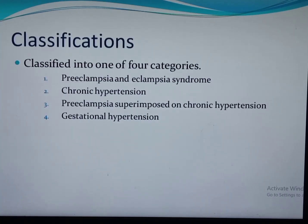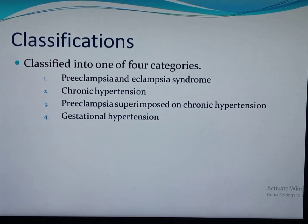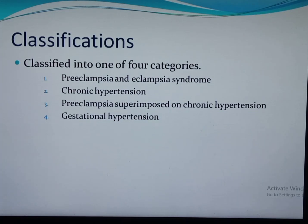There are different classification systems used to classify hypertensive disorders in pregnancy. The commonly used one is proposed by the American College of Obstetricians and Gynecologists, revised in 2013. It classifies into four categories. The first is preeclampsia and eclampsia, which is responsible for the majority of maternal and perinatal mortalities and morbidities associated with hypertensive disorders in pregnancy.